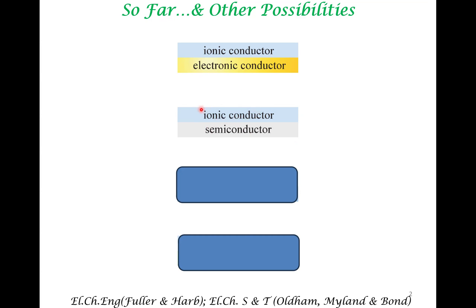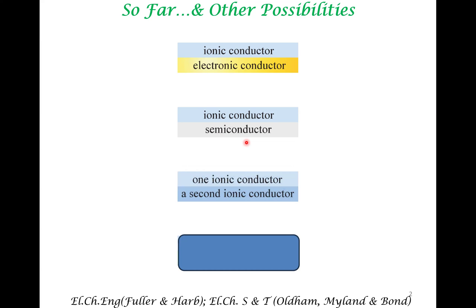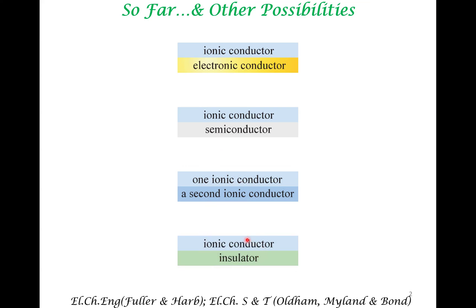Here, the electrolyte is the ionic conductor, but the electrode, instead of it being a metal, is a semiconductor. There are other interfaces that are possible. You can have an interface between two ionic conductors — that is also interesting, but we are not going to be dealing with those. Or you can have an interface between an ionic conductor and an insulator, such as glass — this also has certain interesting electrochemical features, but again we are not going to discuss this. Our focus is going to be on the semiconductor-electrolyte interface.